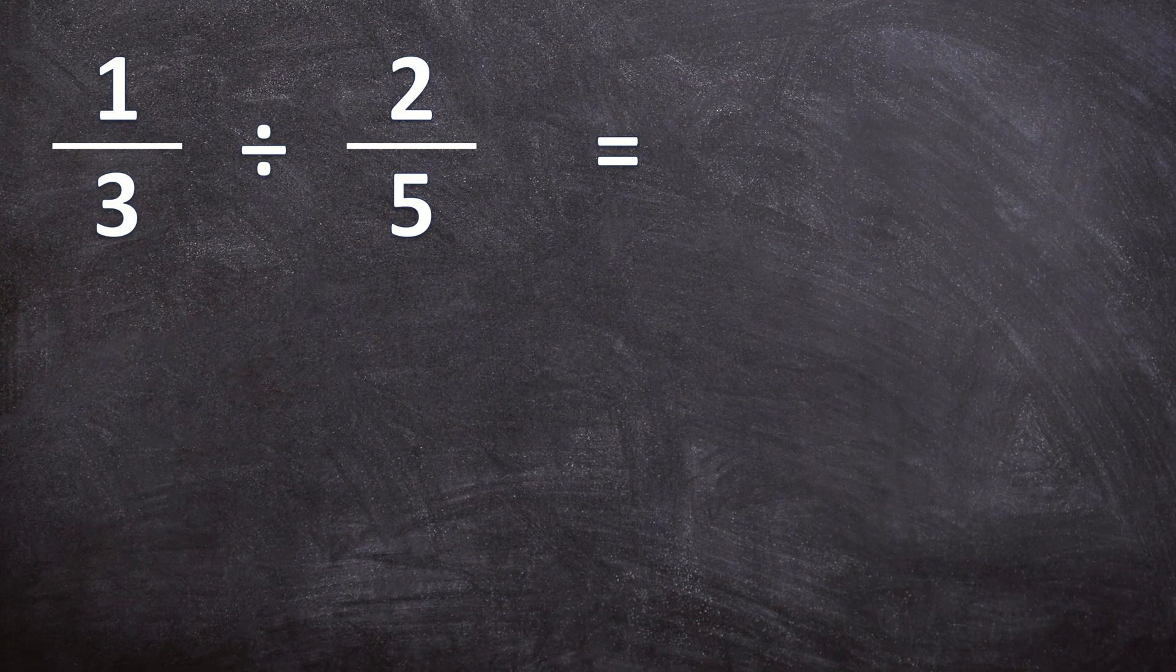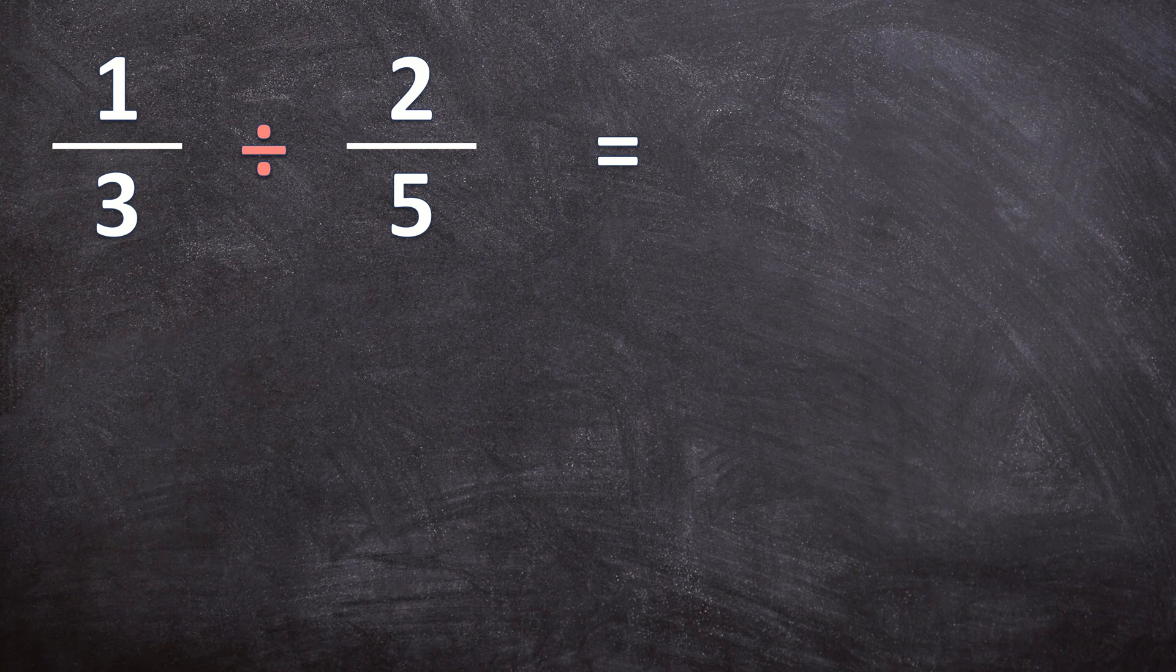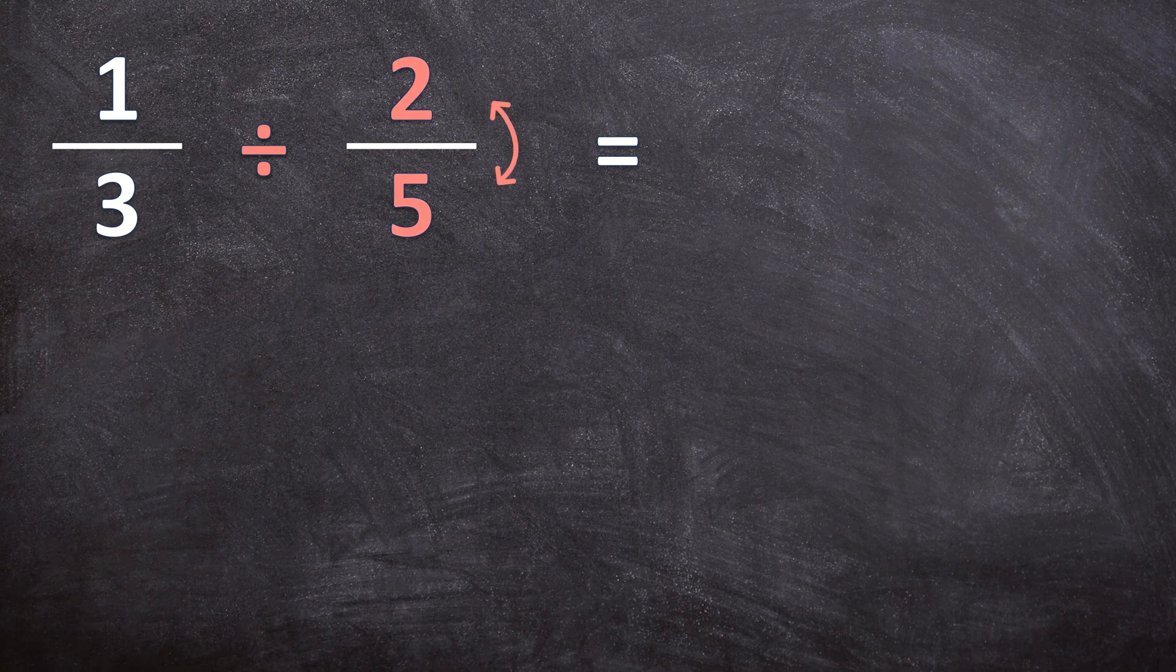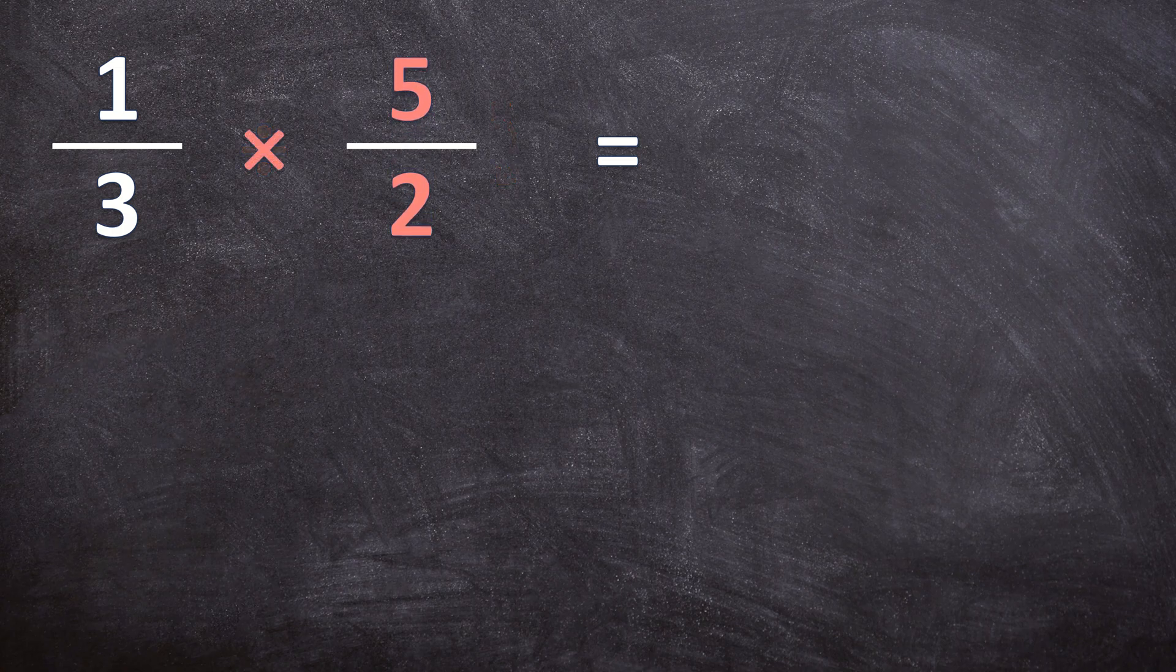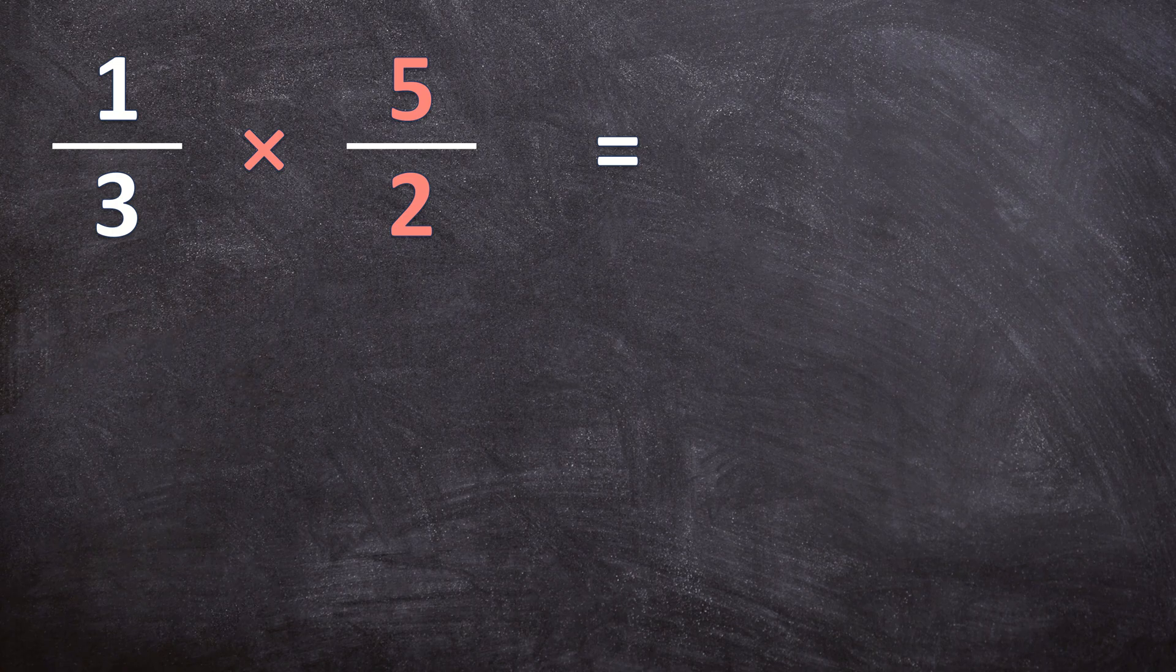When we are dividing by a fraction, we can easily change this division into multiplication by doing the following. We are going to take the numerator and the denominator, the 2 and the 5, and we are going to switch them around. So let's write it down like that. So now we do normal multiplication of two fractions. Multiplication of fractions is really easy like I showed you in the previous video, but I'll also show you step by step in this video.